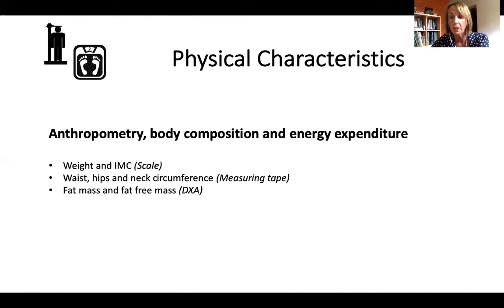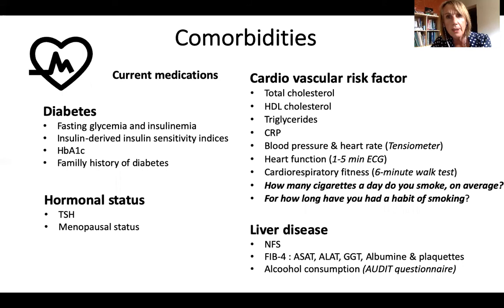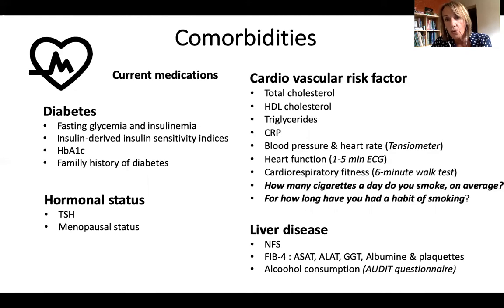Concerning comorbid disease, we are also very minimal. Of course, we record current medication. For diabetes, we only selected glycemia, insulinemia, and HbA1c, together with family history of diabetes. For hormonal status, it's limited to TSH and menopausal status for women. For cardiovascular risk, we have the lipid parameters, CRP, one ECG, and blood pressure. And we think the six-minute walk test is also useful for cardiorespiratory fitness.